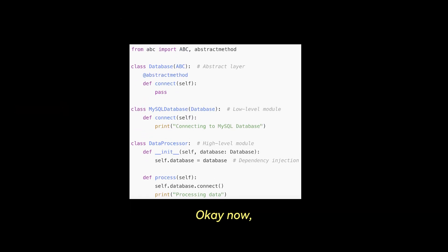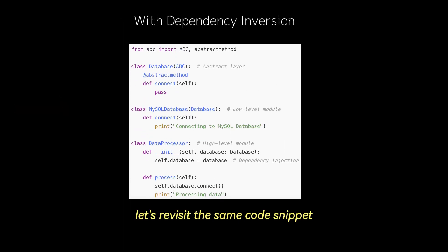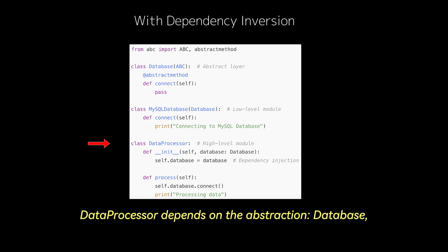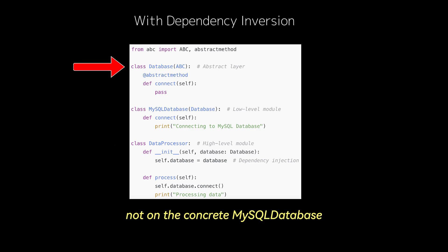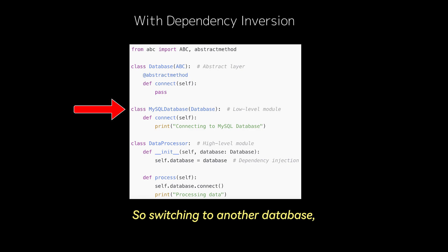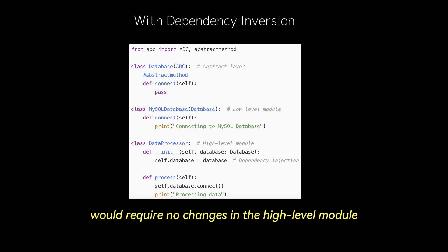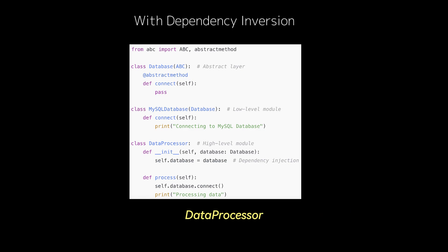Now let's revisit the same code snippet but with dependency inversion introduced. So here, data processor depends on the abstraction database, not on the concrete MySQL database. So switching to another database — for example, Postgres database — would require no changes in the high-level module data processor.